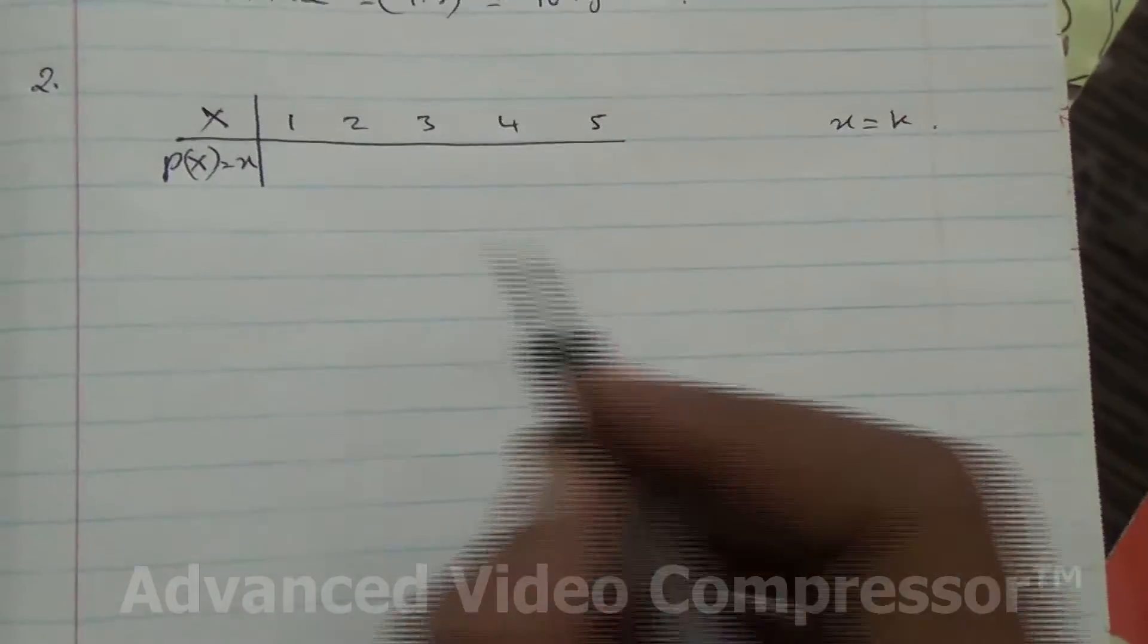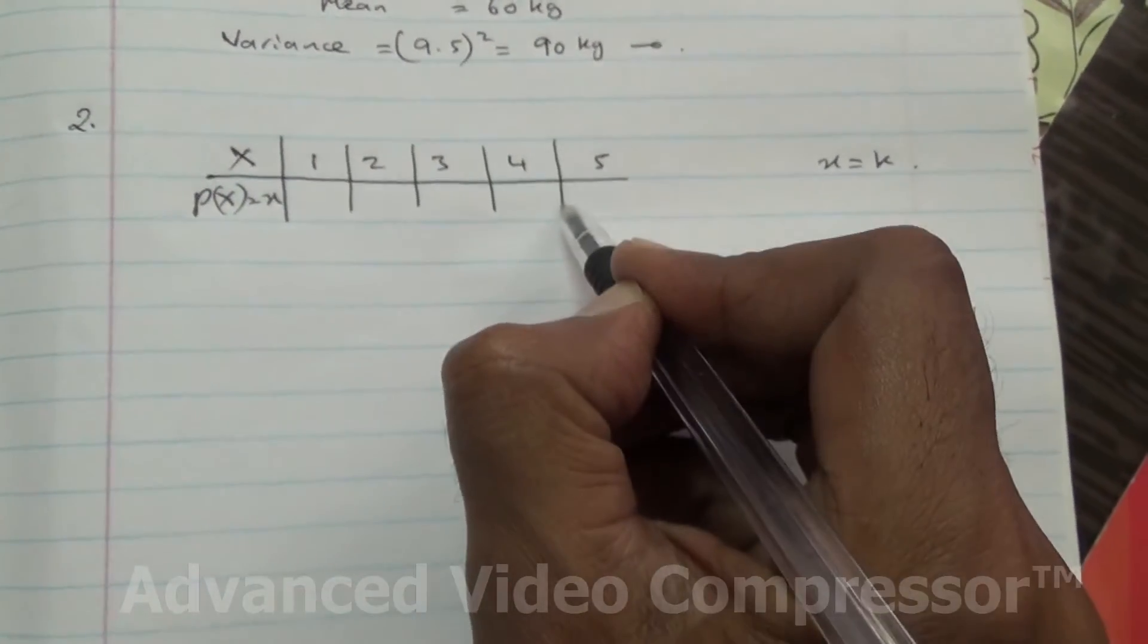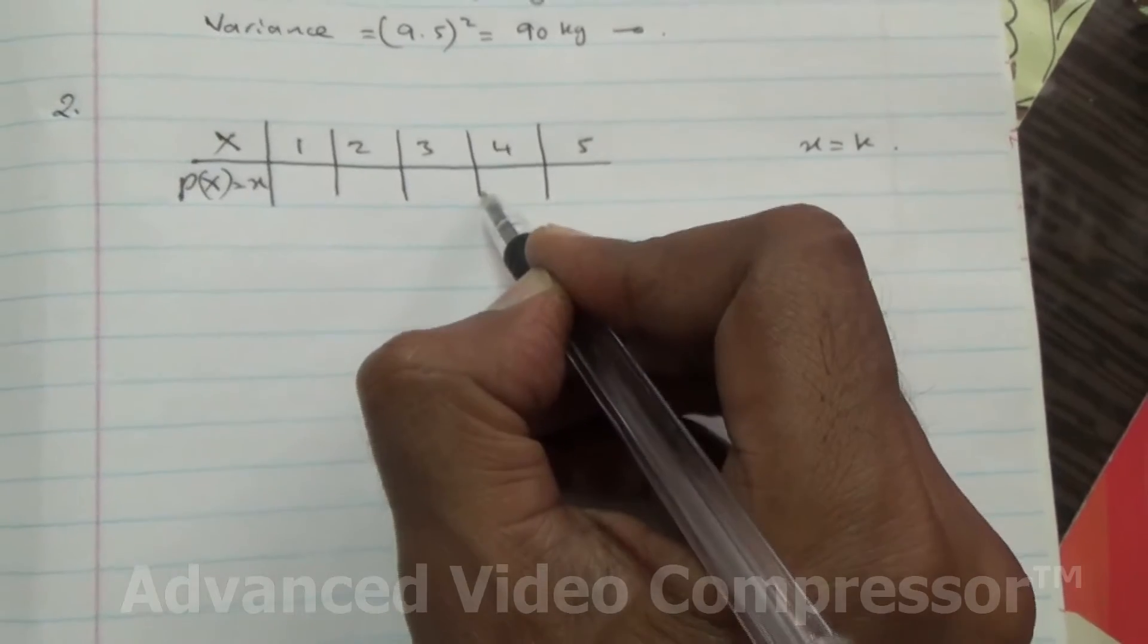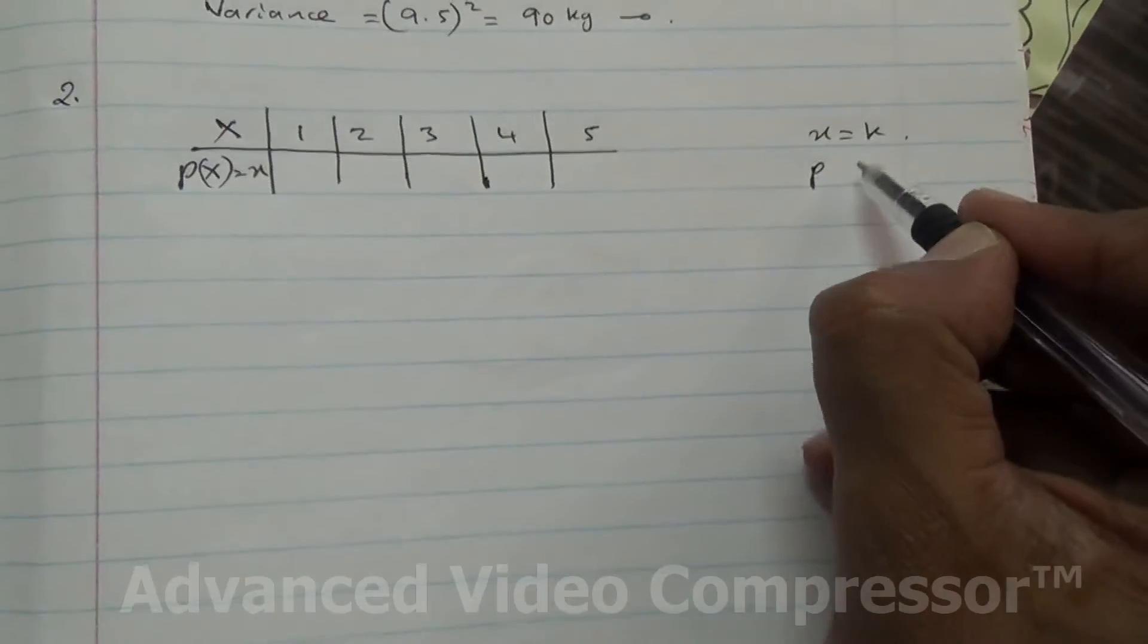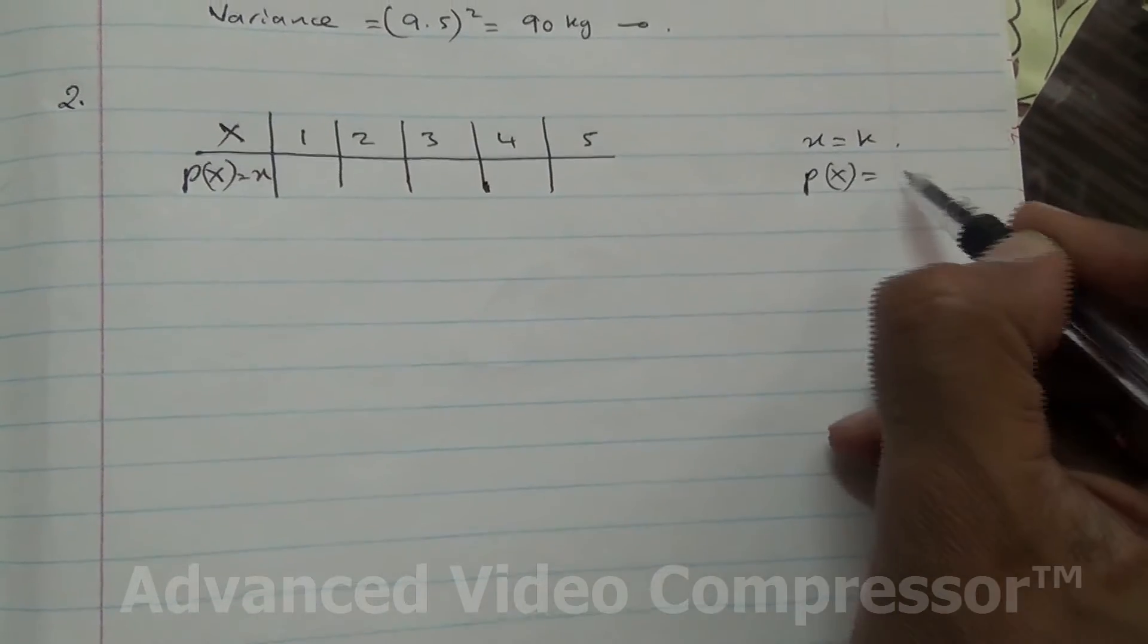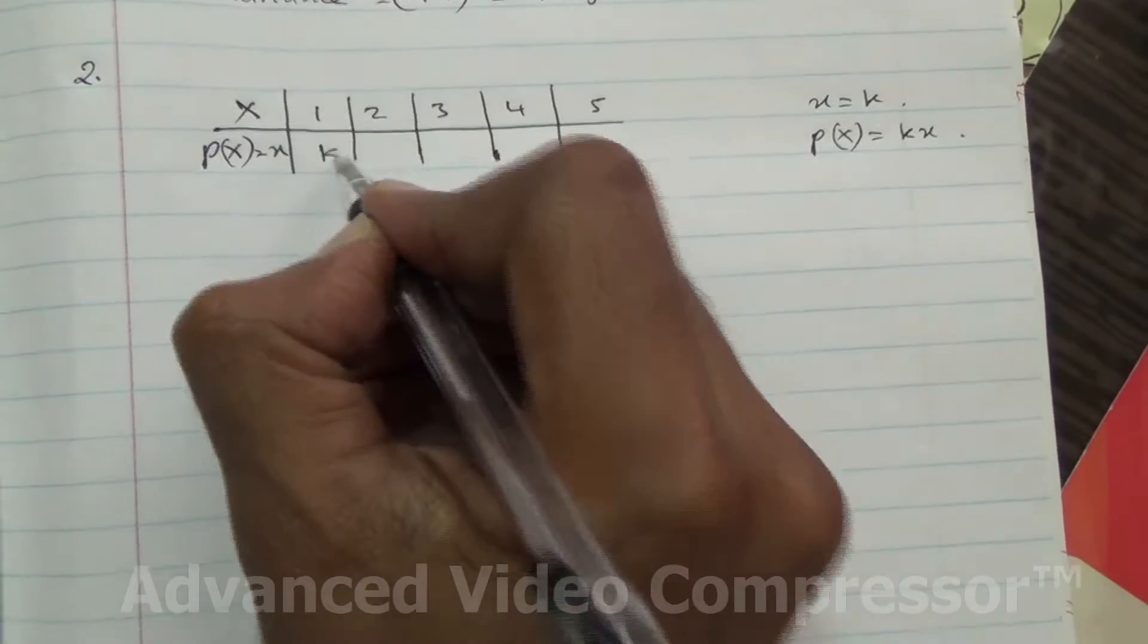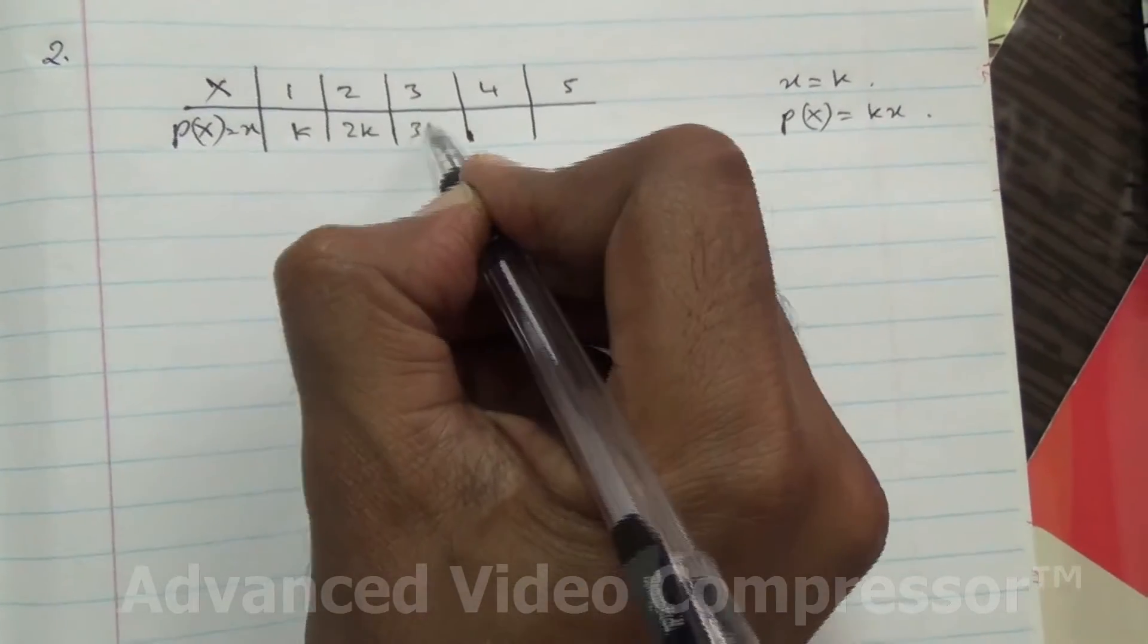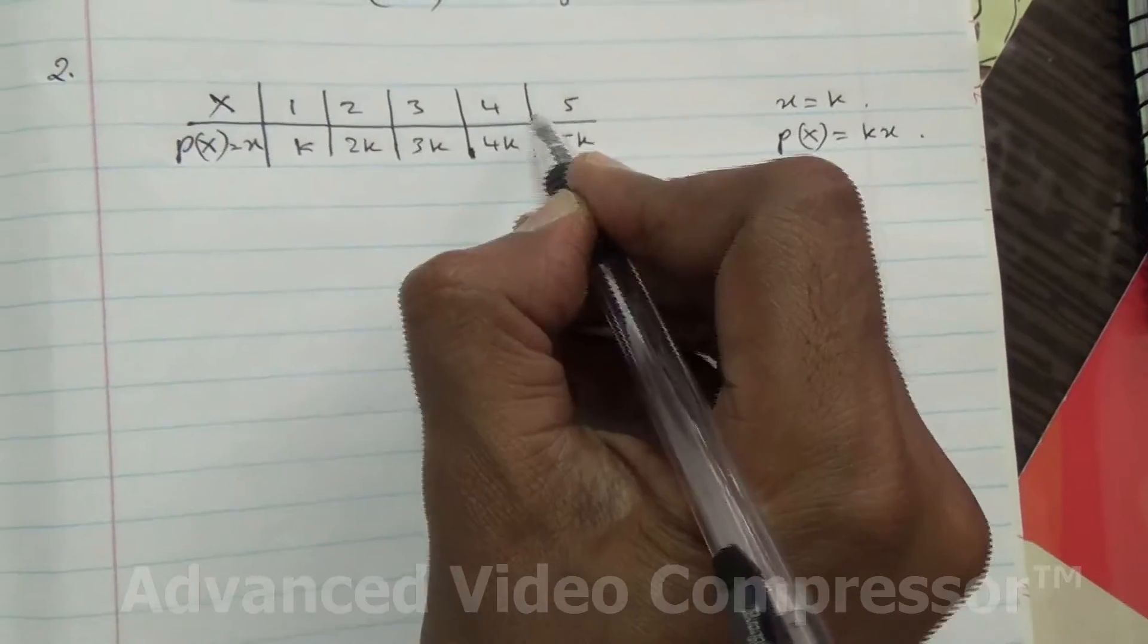Okay, so here we are. We are told that the probability of X is equal to kx. That is, P(X) equals kx. So that means I have k here, 2k here, 3k, 4k, 5k. This is x times k.